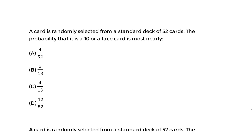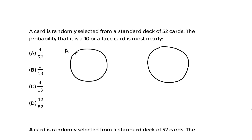I'll draw two separate circles — event A and event B — and notice they do not touch. For event A, the probability of drawing a 10; for event B, the probability of getting a face card. I drew two separate bubbles because this is indeed a mutually exclusive event where they cannot simultaneously occur at the same time. So we simply add the sum of their separate probabilities.